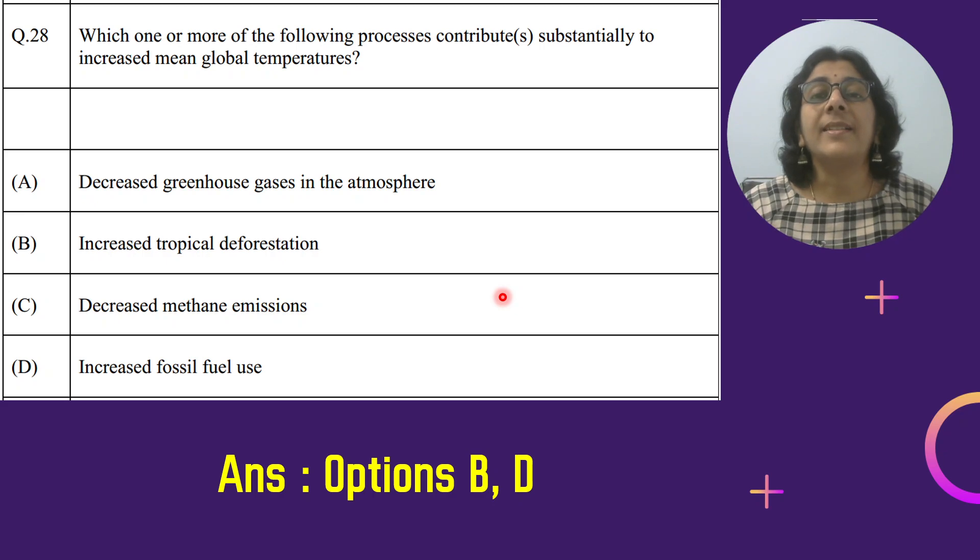Iska example, car hai agar, or woh kahin dhoop mein humne rakh di. Uske sab glasses band hai, darwaze band hai. Or kuch samay ke liye khadi dhoop mein humne woh car rakh di hai. To kya hota hai - sunlight ki sun rays toh andar chali jati hai. Magar woh glass ki wajah se bahar nahi aa pati. Or jab hum car ka darwaza kholte hai, toh car ke andar bahut zyada garmi hamein mehsoos hoti hai.